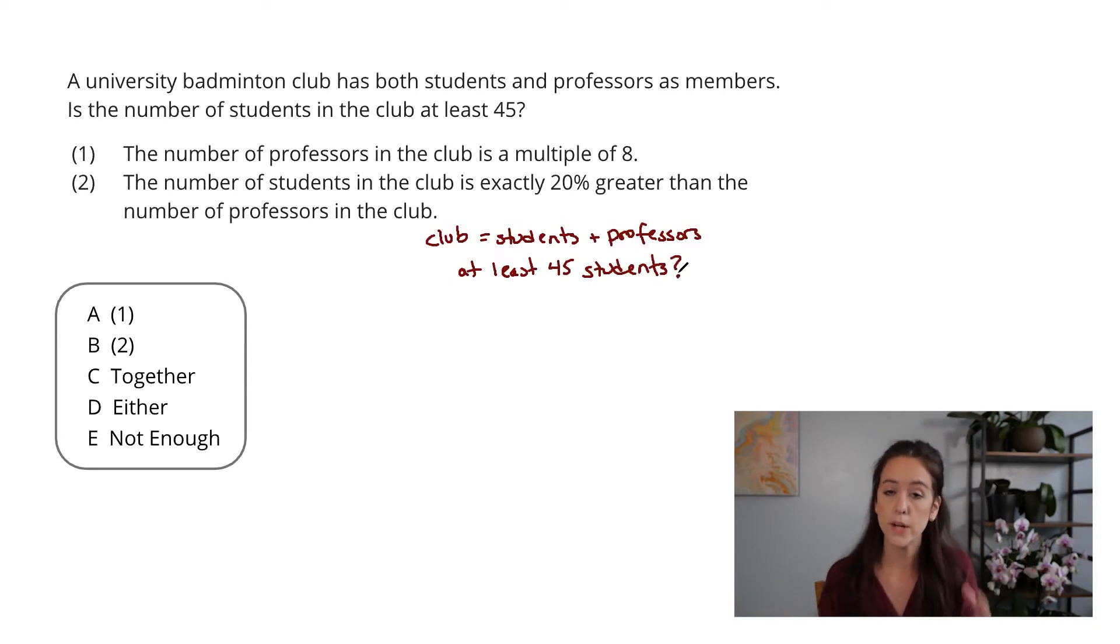I want to take a quick note, this is data sufficiency, what kind of information am I looking for? Well, certainly if I am told the number of students, that's going to be sufficient. Also, if I know something about the professors and the club, that could be enough to figure out the number of students. I'm keeping my options open for what the GMAT might be giving me in the statements. There are a lot of different things here that could turn out to be sufficient.